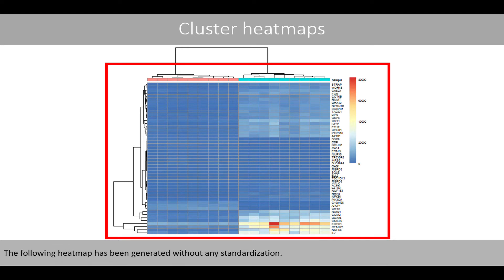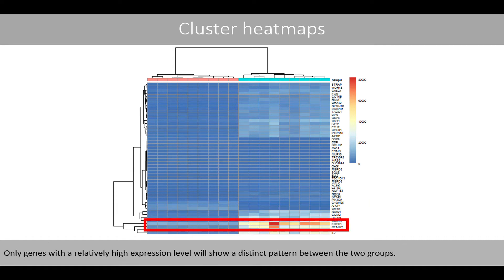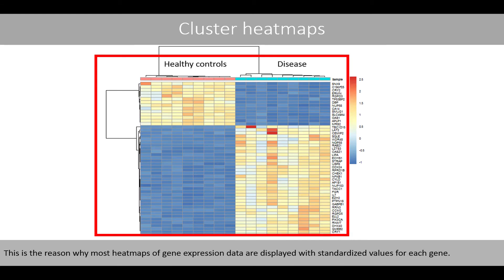The following heatmap has been generated without any standardization. However, the problem with this type of heatmap is that there is barely any difference in color between the disease group and the healthy controls for genes with a relatively low expression level. Only genes with a relatively high expression level will show a distinct pattern between the two groups. This is the reason why most heatmaps of gene expression data are displayed with standardized values for each gene.